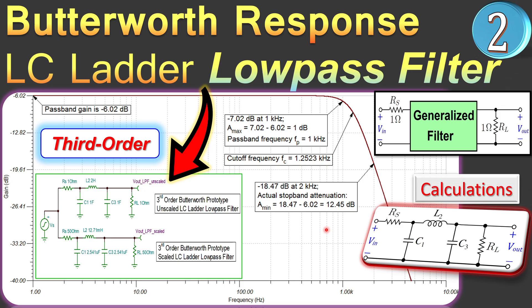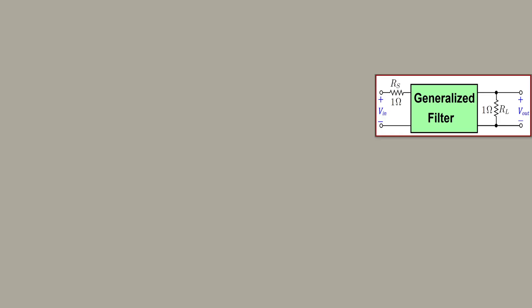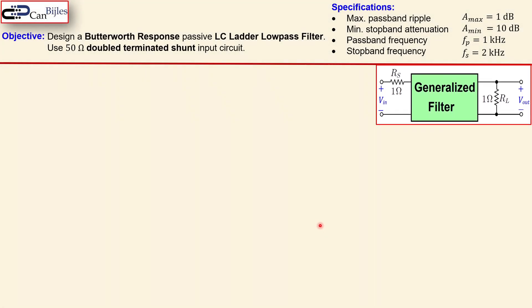Of course we will work out everything in the calculations step by step and also verify these in SPICE simulations. So let's look at our objective or design. As said, it's a Butterworth response and it must be a passive and an LC ladder low pass filter configuration and we will use double terminated shunt input circuit of 50 ohm each.